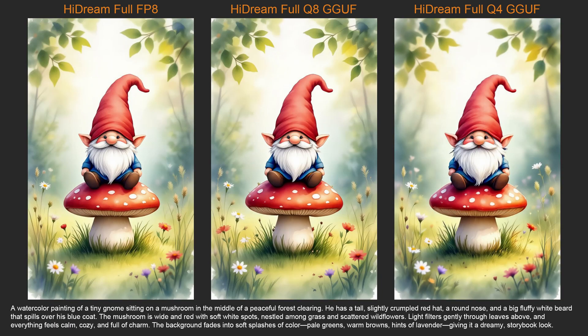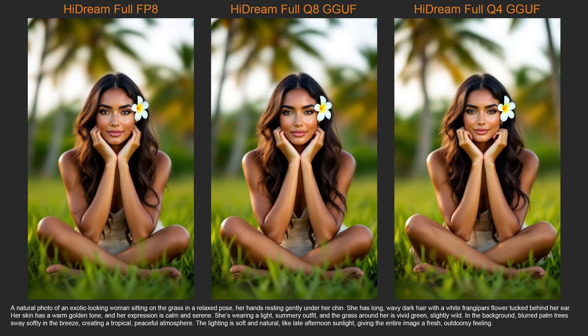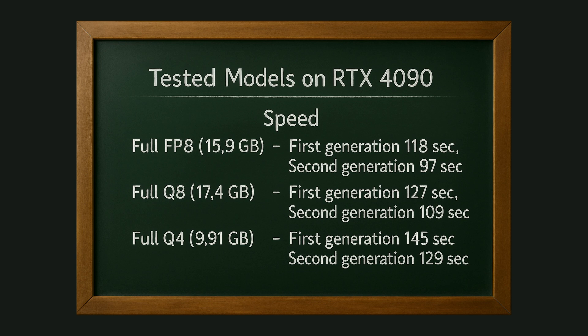For other images, they are pretty similar. In theory, the Q4 version has less quality and could have more mistakes as the number decreases. Since it's hard to choose, in my opinion, the quality of Q8 is the best, followed by FP8 and then Q4. As for speed, the fastest was FP8, and the slowest was the Q4 version, even though it's almost half the size. You'll need to test it on your card, because depending on your system, Q4 might be faster than Q8, but on my card, Q8 seems to be faster than Q4. So if you have the same card as mine, the choice is clearly between Q8 and FP8. FP8 is a little faster, while Q8 is a tiny bit slower but offers a bit more quality in some cases.